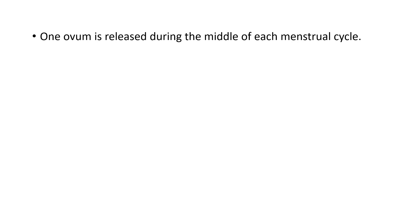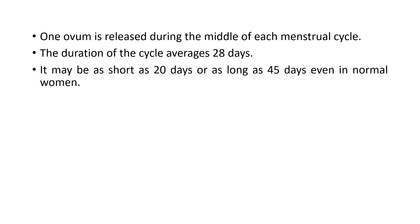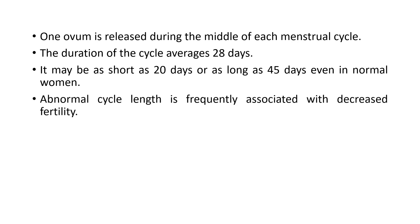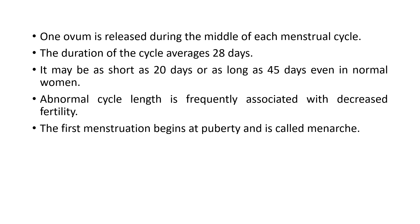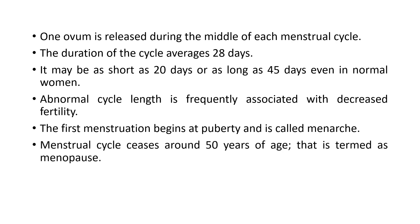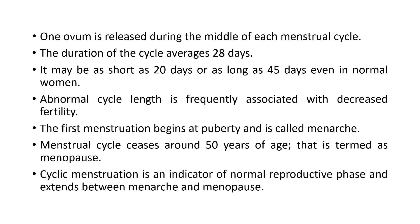At the midpoint of each cycle, one ovum is released. The average duration of the cycle is 28 days. However, the duration may be as short as 20 days or may be as long as 45 days. Mostly, any abnormality of the cycle length is associated with decreased fertility. The first menstruation that occurs at puberty is known as menopause. The cessation of menstruation is called menopause, that occurs at around 50 years of age. Cyclic menstruation phases extending between menopause and menopause is an indicator of normal reproductive phase.